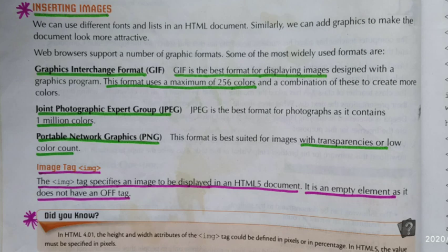The short forms are given in brackets — make sure you don't forget that. Graphic Interchange Format is the best format for displaying images designed with a graphics program. This format uses a maximum of 256 colors, and a combination of these to create more colors. Remember, the format uses a maximum of 256 colors.